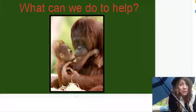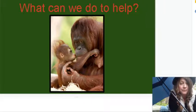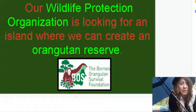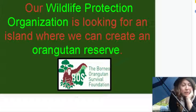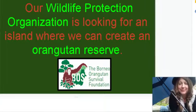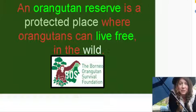So you might be thinking — that's horrible, what can we do? There's got to be something we can do to help. But what? We live all the way over here in Michigan, all the way across the world. Well, our wildlife protection organization that we talked about last week is looking for a special island that we can create where orangutans can be safe. What we want to make is a reserve — a protected place where orangutans can live free and in the wild.